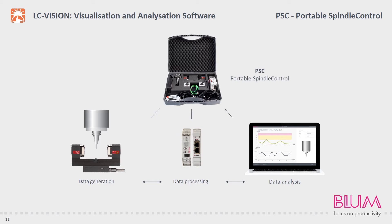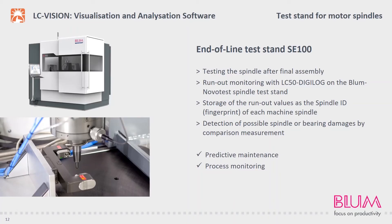The LC Vision functions explained previously are therefore available in the same way. Thanks to straightforward and service-friendly commissioning, portable spindle control is ideal for servicing applications during which the spindle condition of the machine is checked. Finally, I want to introduce the SC100, a system offering comprehensive testing and evaluation of spindle quality. The SC100 enables manufacturers of spindles, but also of machine tools, to check a motor spindle after final assembly. For instance, you can document the supply and delivery condition of the spindles, and you can also draw conclusions regarding development and optimization. As an option, the LC50 DigiLog can be used as a sensor on the SC100. Runout values for every machine spindle can therefore be recorded and documented as a spindle ID.